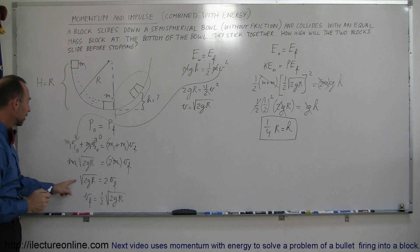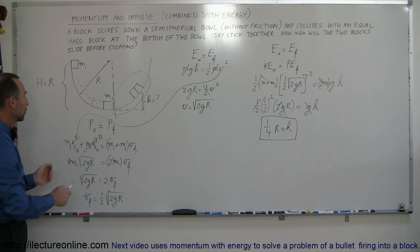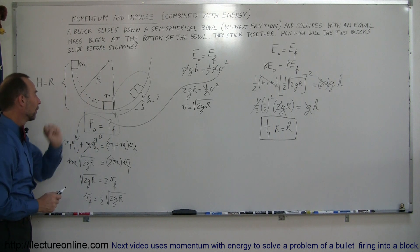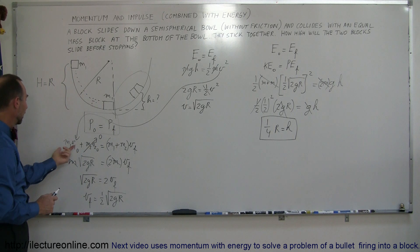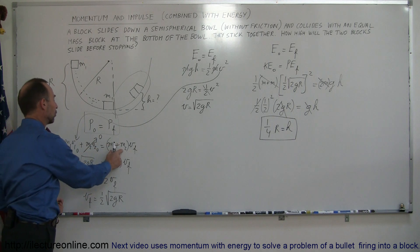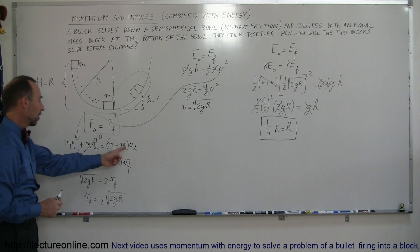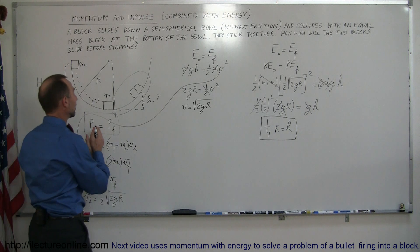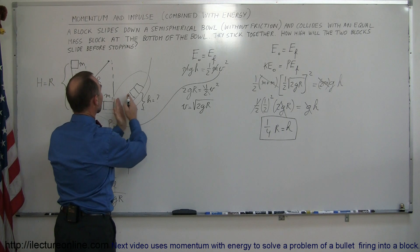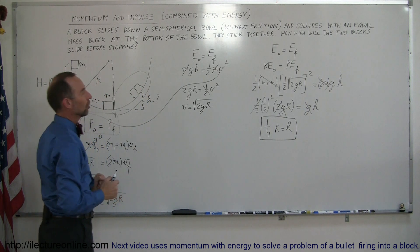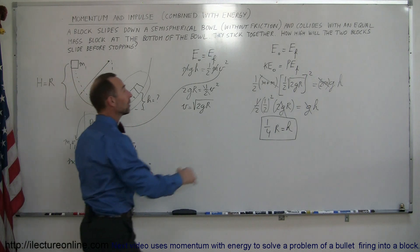That's the velocity the block has when it collides with the other block. We use conservation of momentum to show that initial momentum equals final momentum at the collision. Right before the collision, block 1 is the only one with momentum: m times v, where v equals square root of 2gr. After the collision, the two blocks stick together, so it's the two masses times the final velocity. We solve for final velocity in terms of g and r, then consider the two blocks sliding up the hill, losing kinetic energy to potential energy before stopping.